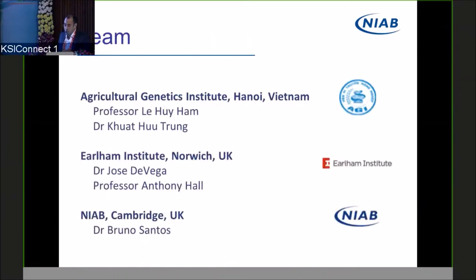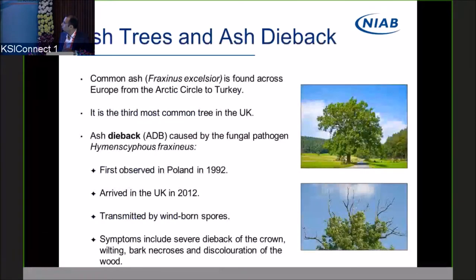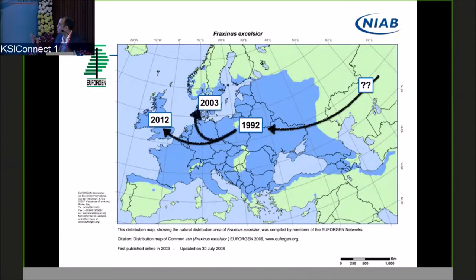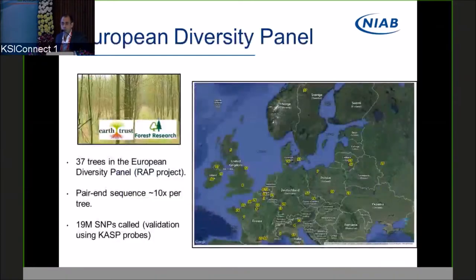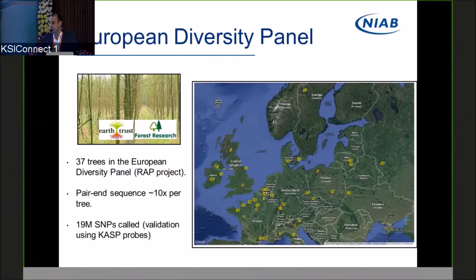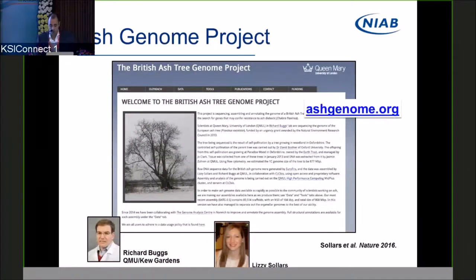I'd like to move quickly to how we can use diversity data for other applications. I've been part of the ash dieback effort in the UK. This disease is affecting ash trees, coming from the east — it arrived in the UK in 2012 and has been devastating in places like Denmark. Through diversity we hope to breed for tolerance to the disease. An important point for diversity: if we're going to breed for tolerance, we need to make sure we preserve the natural diversity we had before. That was the objective of our project — another example of moving from a single genome to many genomes.